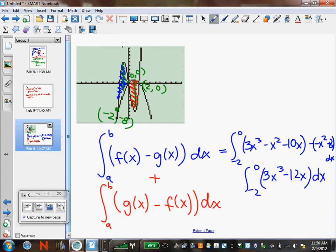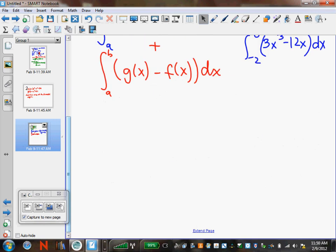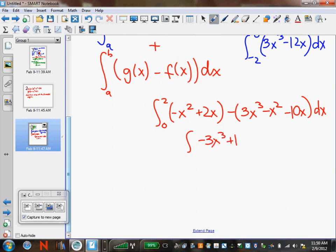My red area intersection points are from 0 to 2, and it's g of x minus f of x. So that's minus x squared plus 2x. And then I'm going to subtract my f of x. 3x cubed minus x squared minus 10x dx, which all simplifies to negative 3x cubed plus 12x dx from 0 to 2.